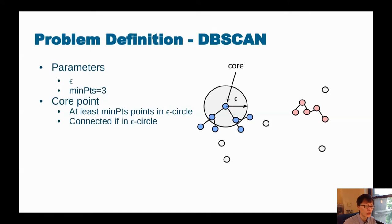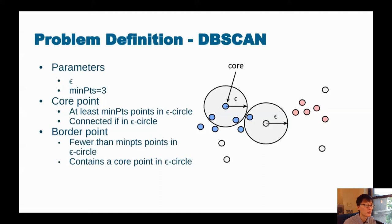But we still have some other points left. Let me next define border points. Border point has fewer than minPts number of points in its epsilon circle. However, in its circle it contains at least one core point. So it will have the same cluster assignments as the core points in its epsilon circle.